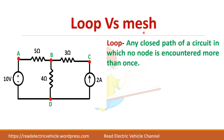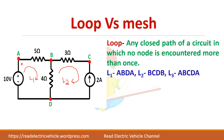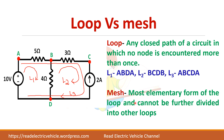Now let us see the difference between loop and mesh. Mesh is a common term used in electric circuit analysis. A loop is any closed path. In this circuit there are three loops: L1 is one loop, L2 is another loop, and the third loop is the whole path A-B-C-D-A. So totally there are three loops. A mesh is the most elementary form of a loop.